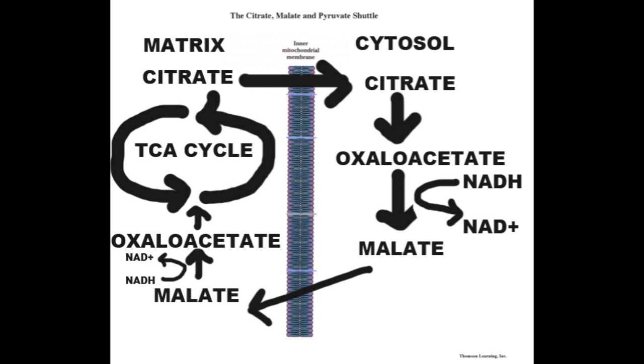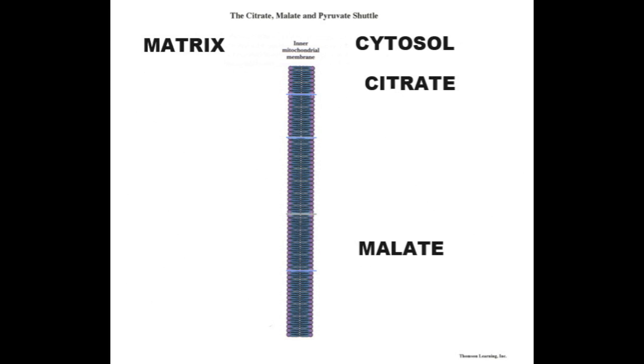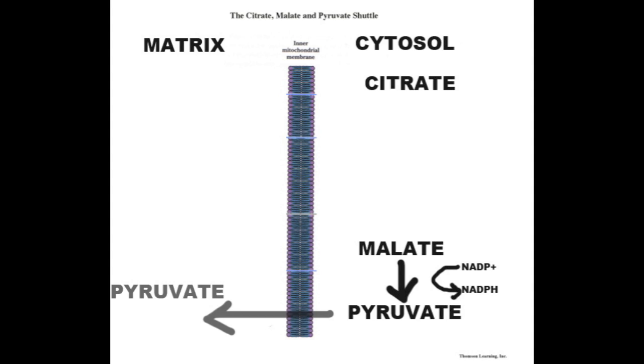Now I'm going to reel it back in and focus just on two of the players in this cycle, citrate and malate, on the cytosolic side of the mitochondrial membrane. Some of the malate is going to be converted to pyruvate. In the process, one NADP+ is going to be converted into one NADPH. The pyruvate will then be moved into the mitochondrial matrix.